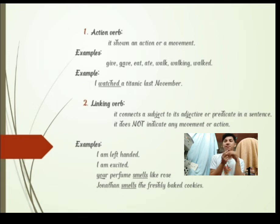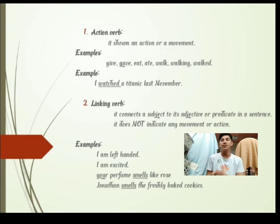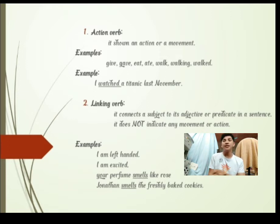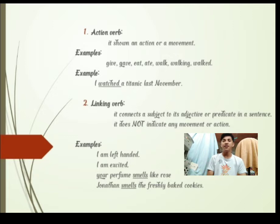Let's identify whether the verb is an action verb or a linking verb in these two examples. First: 'Your perfume smells like a rose.' Second: 'Jonathan smells the freshly baked cookies.' The word 'smells' in the first sentence does not indicate an action verb — it simply identifies that the perfume smells like a rose, so it is a linking verb. In the second sentence, 'smells' indicates an action verb because Jonathan is actively smelling the freshly baked cookies.